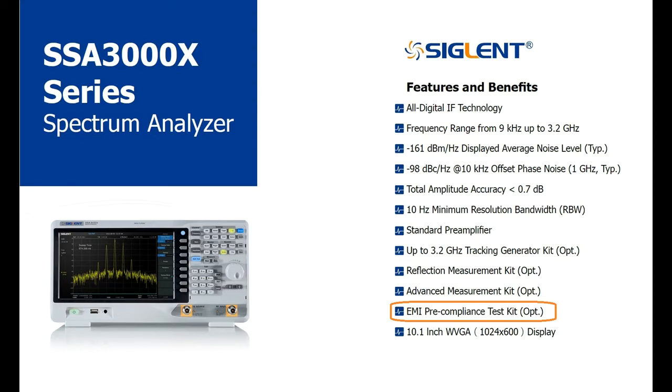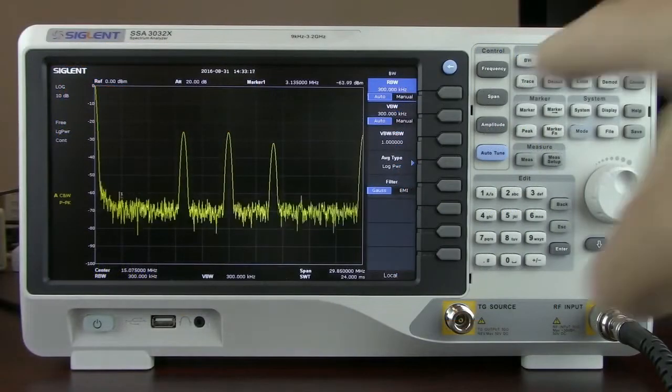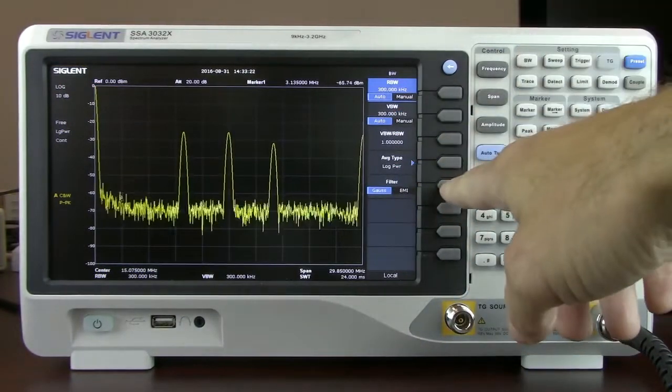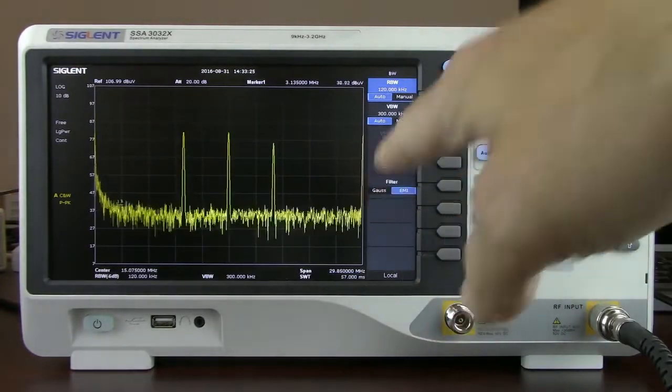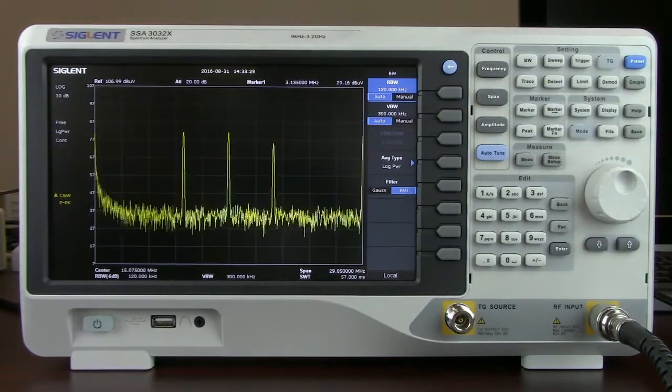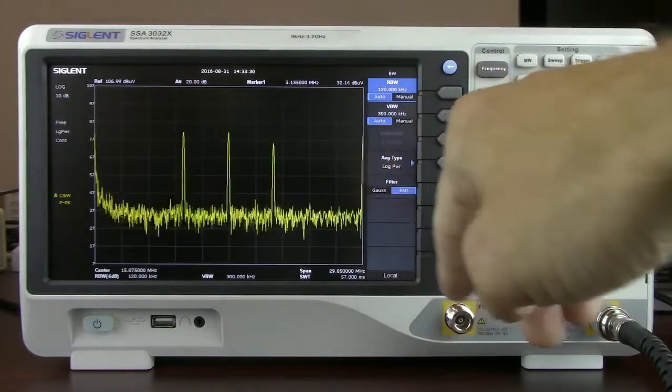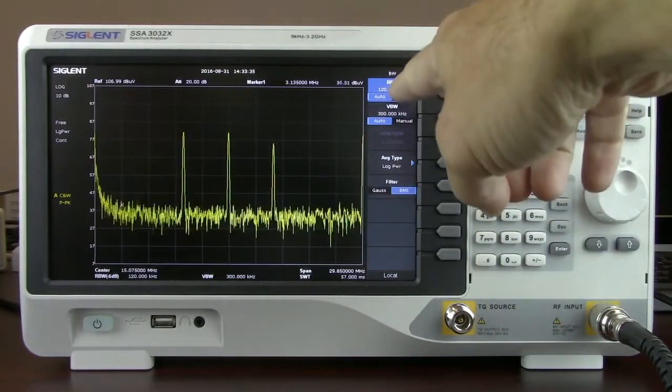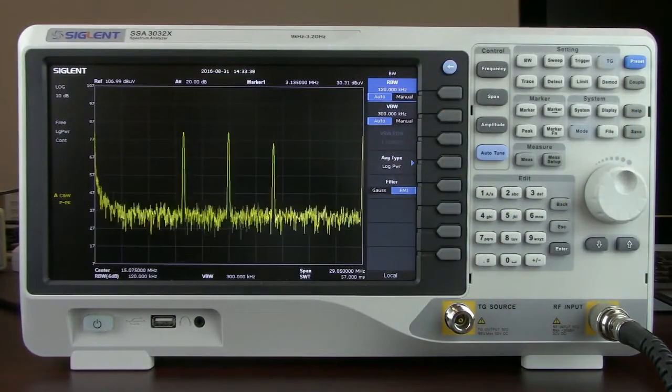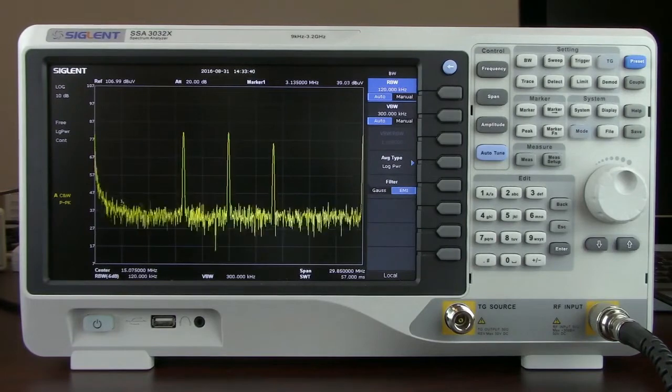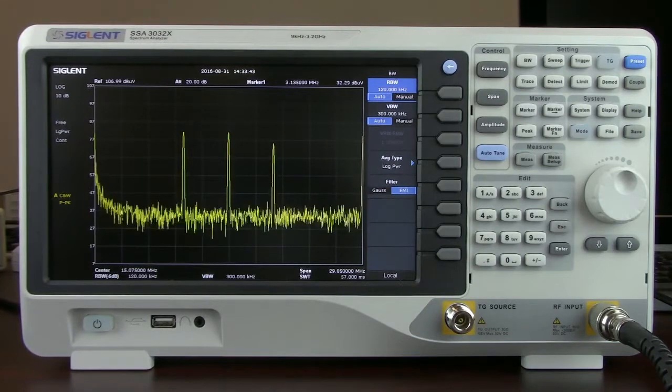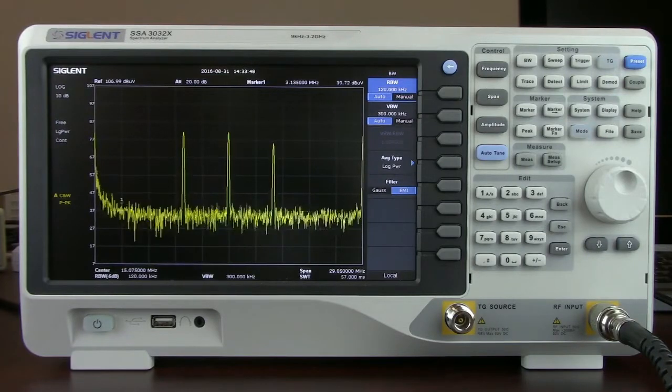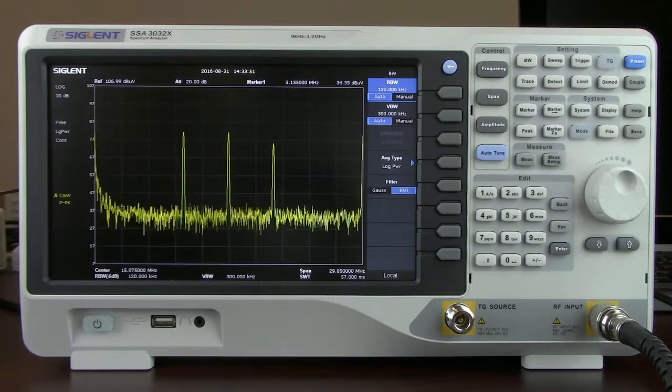Some of the things that come with this particular feature are going to be the EMI filter. We can enable that by pressing the bandwidth key and then enabling EMI. And once you've enabled the EMI filter, again that's a 6 dB filter as compared to the normal 3 dB Gaussian filter. That 6 dB EMI filter is then going to enable you to select resolution bandwidths of 200 Hz, 9 kHz, and 120 kHz.